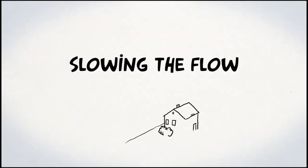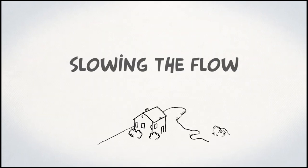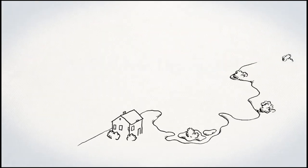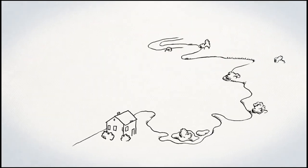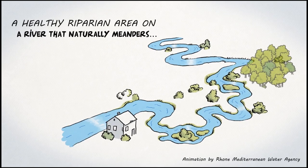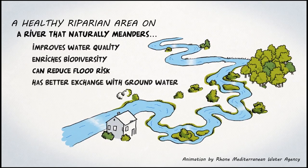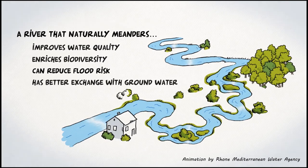Riparian areas are important for people too. By slowing water down, they help the earth catch it like a sponge into the riverbanks. The water then gets released slowly, making it possible to have flowing rivers even after a dry period.